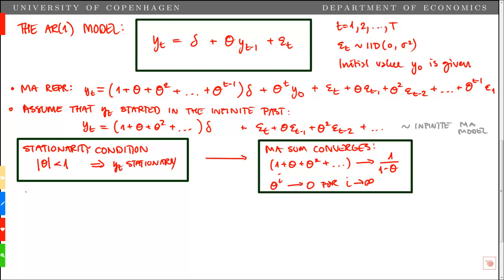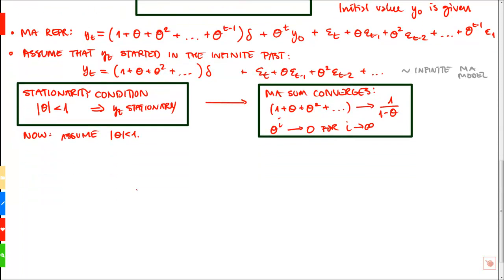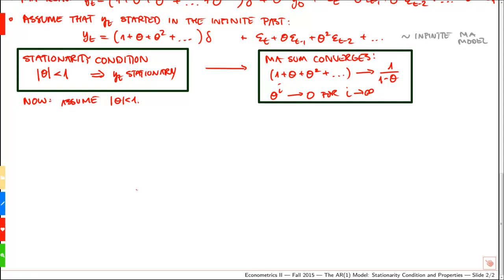From now on, assume that theta fulfills the stationarity condition. We will use that to consider the unconditional mean, variances, and covariances, and show that these are constant so that the process is stationary, given that the stationarity condition is fulfilled. First, we look at the unconditional mean.